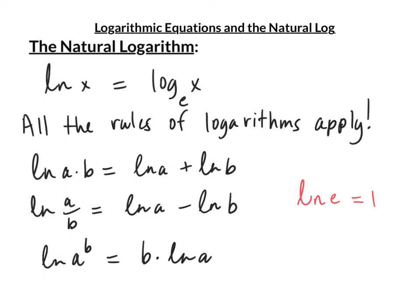Now that we have e, we can talk about the natural logarithm. In equations that involve e, the natural log makes them much easier to solve. The natural log of x is exactly the same as log base e of x — there is no difference. All logarithm rules apply: the natural log of a times b equals the natural log of a plus the natural log of b. When you divide, you subtract. The power rule brings the exponent down in front.